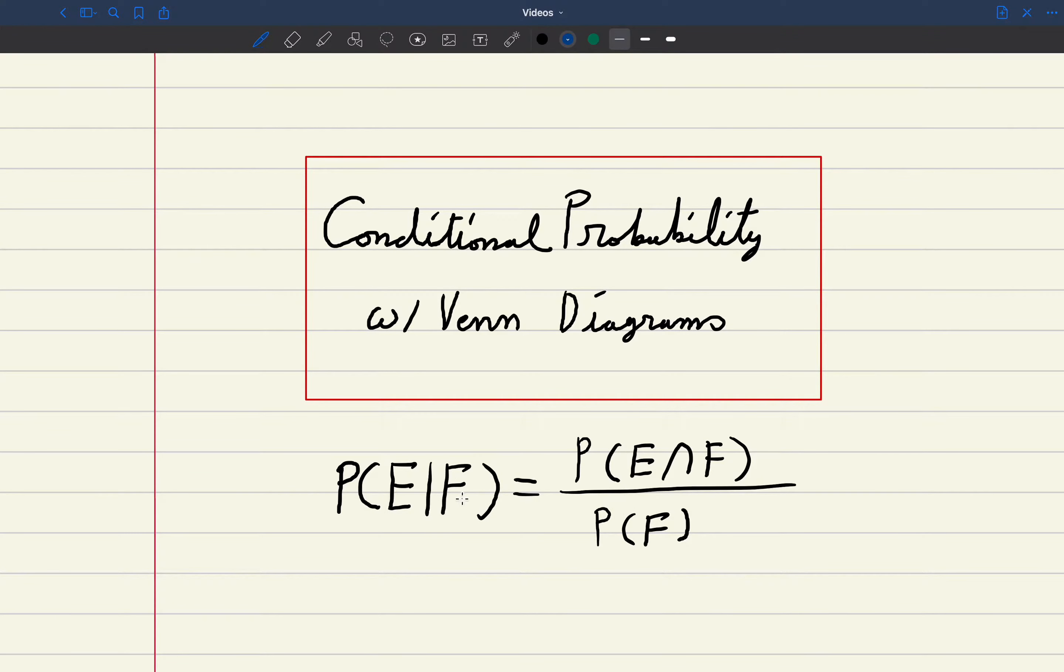So with conditional probability we're promised that F has occurred, whatever that event is, so we will divide by the event that has occurred and not by the total sample space. That's what is different about conditional probability versus standard probability where you would divide by the sample space. We're not going to do that with conditional probability.